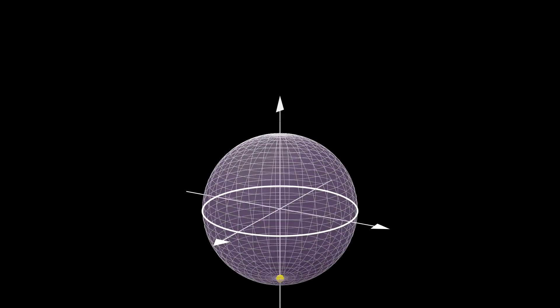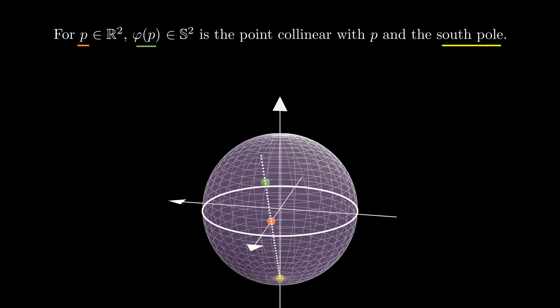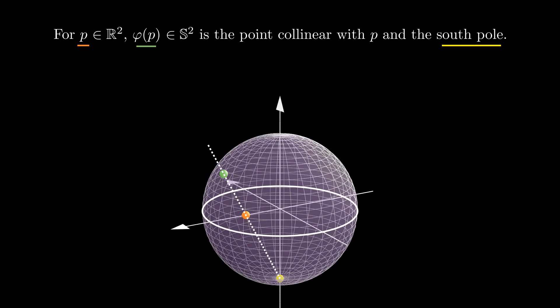Another chart we can use for the sphere is the stereographic projection. For each point p in the xy plane, we consider the line passing through p and the south pole, and let phi be the point where this line touches the sphere again.